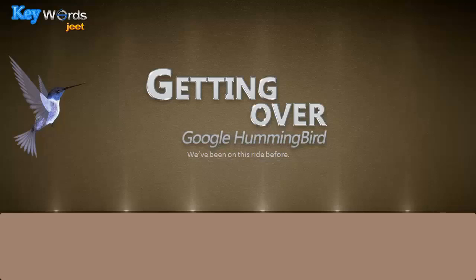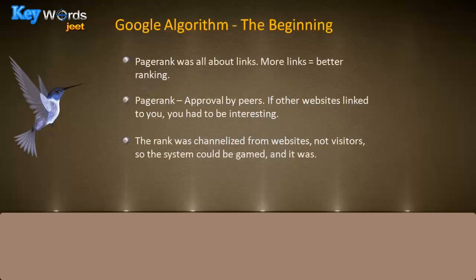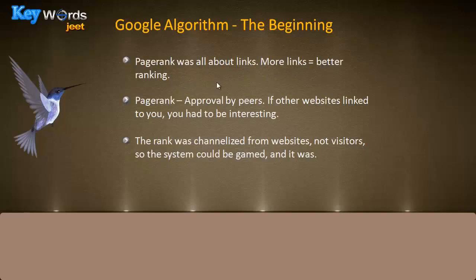Before I actually begin talking about the specific impact of Hummingbird on SEO, I want to go a little back into the history of search engines and talk about Google's algorithm as it began. When Google began, Google's algorithm was all about PageRank, and PageRank was all about links — more links equals better rankings. This was how the actual SEO industry worked for almost 15 years of Google's existence.